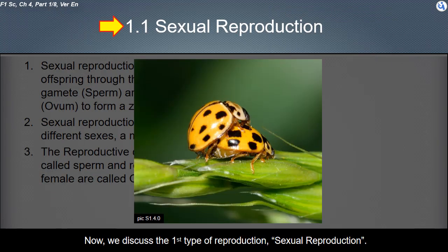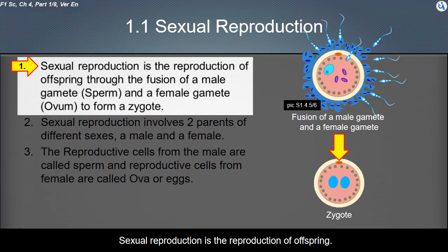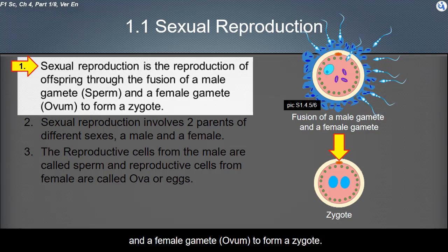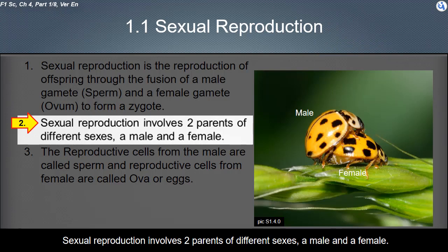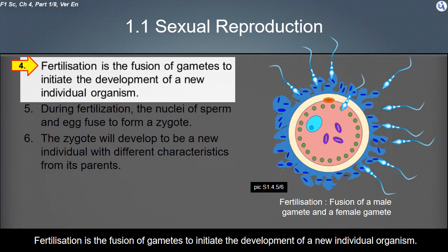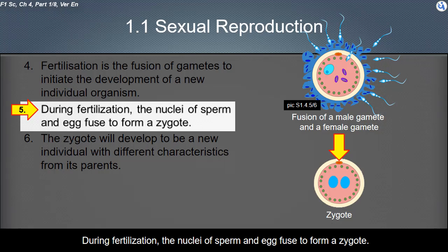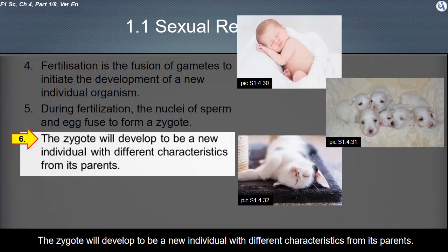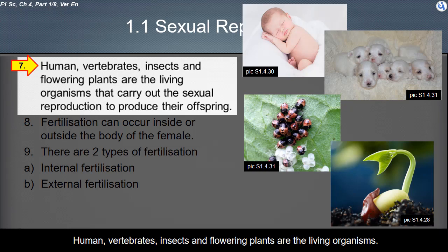Sexual reproduction is the reproduction of offspring through the fusion of a male gamete (sperm) and a female gamete (ovum) to form a zygote. Sexual reproduction involves two parents of different sexes — a male and a female. The reproductive cells from the male are called sperm, and reproductive cells from the female are called ova or eggs. Fertilization is the fusion of gametes to initiate the development of a new individual organism. During fertilization, the nuclei of sperm and egg fuse to form a zygote.